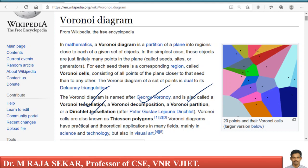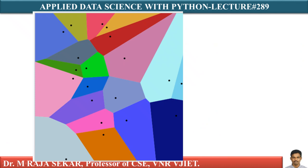Let me explain what Voronoi tessellation means. It is related to our algorithm — the K-Nearest Neighbor algorithm, that is KNN. To be specific, the Voronoi diagram is related to KNN with K equal to 1.